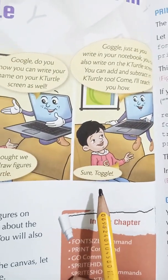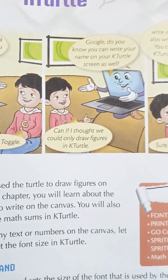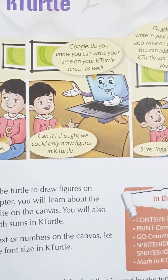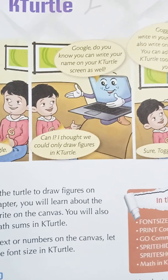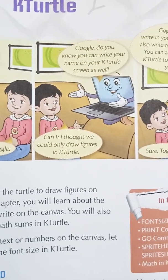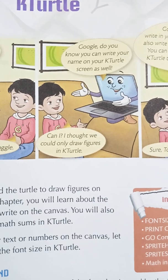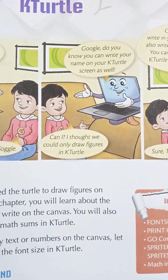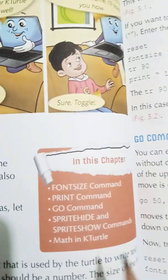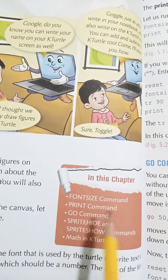Toh yeh kya baatein kar rahe hain? Goggle ko Toggle bata raha hai ki woh apna naam bhi likh sakta hai K-Turtle pe, aur math bhi kar sakta hai. Aur Goggle yeh samajh raha tha ki woh sirf drawing kar sakta hai.